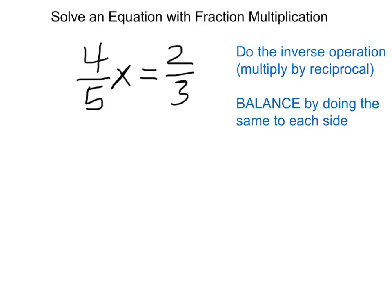The inverse of multiplying by 4 fifths is to multiply by 5 fourths. So I'm going to do that on both sides.